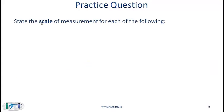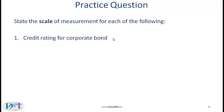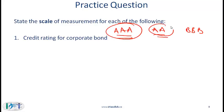Consider this practice question: state the scale of measurement for the credit rating of a corporate bond. Corporate bonds have credit ratings indicating probability of default — AAA is better than AA, which is better than A, and then lower ratings like BBB. The order makes sense because AAA is better than AA, but we cannot say much about the interval between ratings. So this would be an ordinal scale, where the order makes sense.